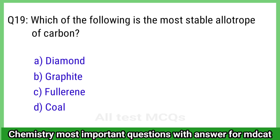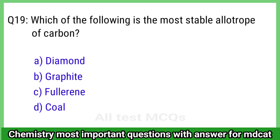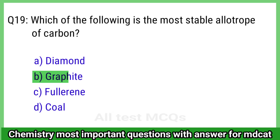Question 19: Which of the following is the most stable allotrope of carbon? The correct answer is option B, graphite.